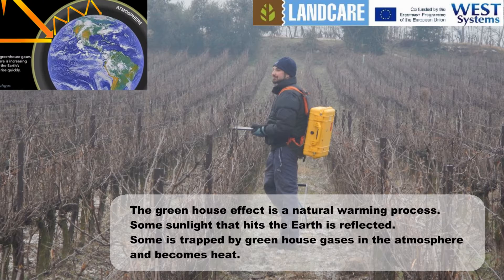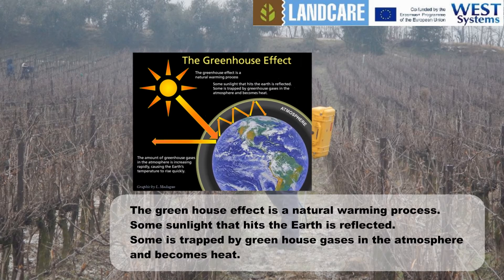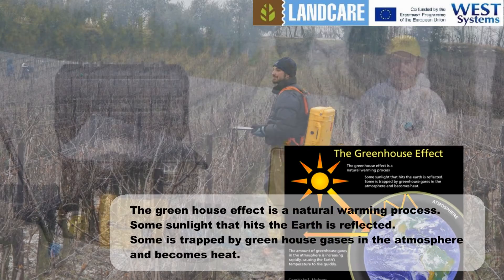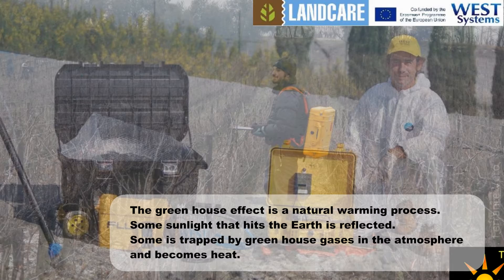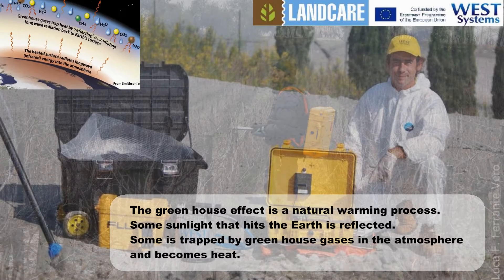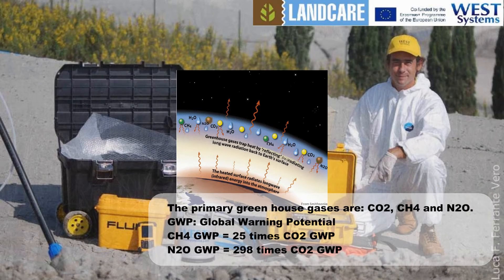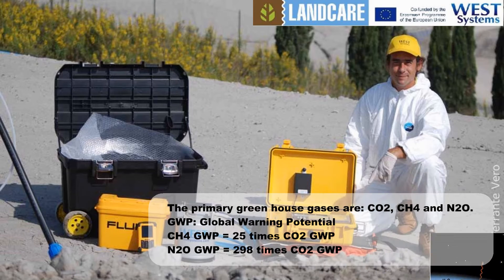The greenhouse effect is a natural warming process. Some sunlight that hits the earth is reflected, and some is trapped by greenhouse gases in the atmosphere and becomes heat. The primary greenhouse gases are carbon dioxide, methane, and nitrous oxide.